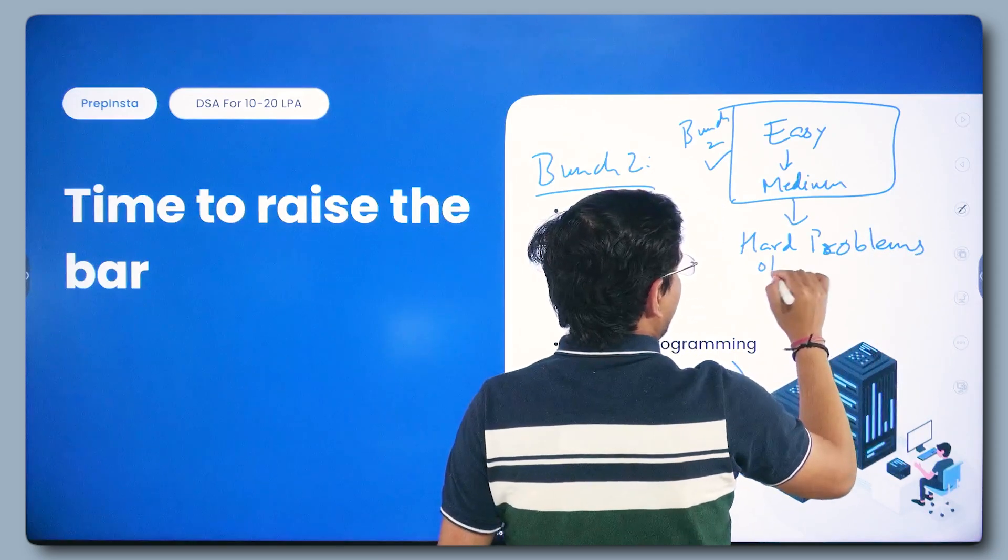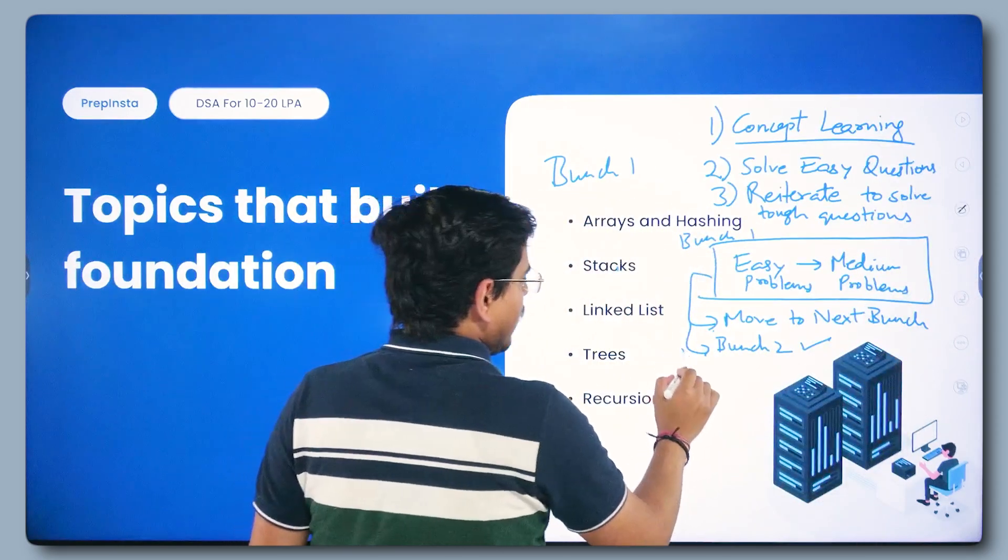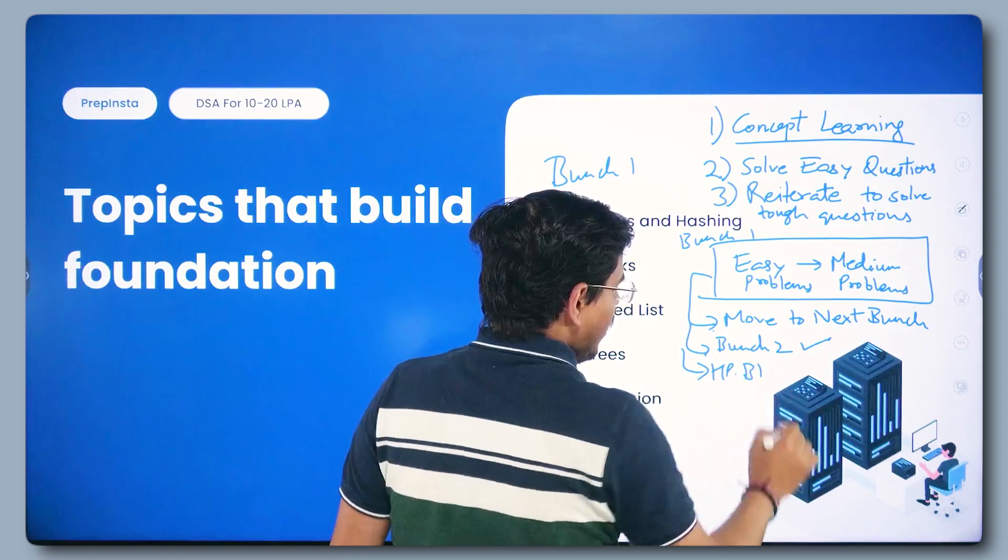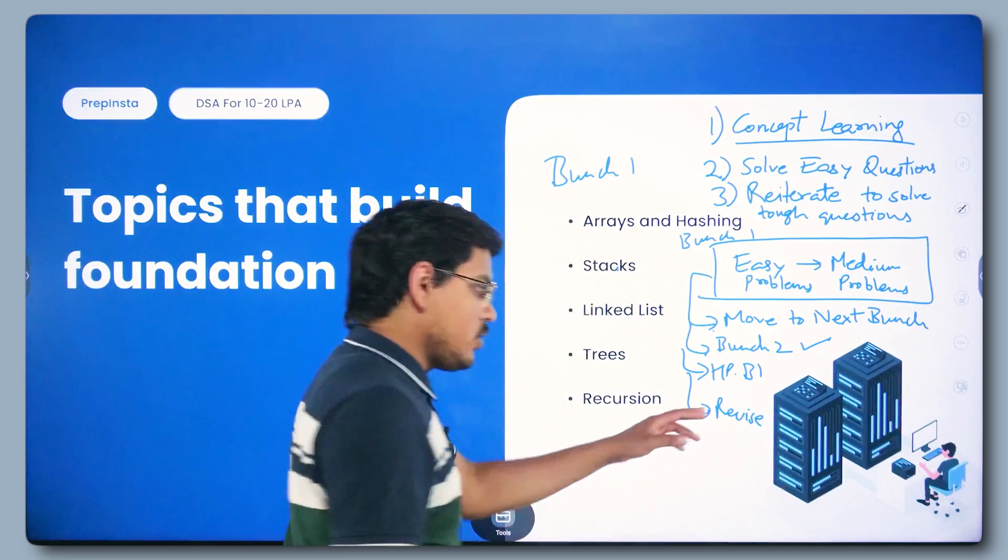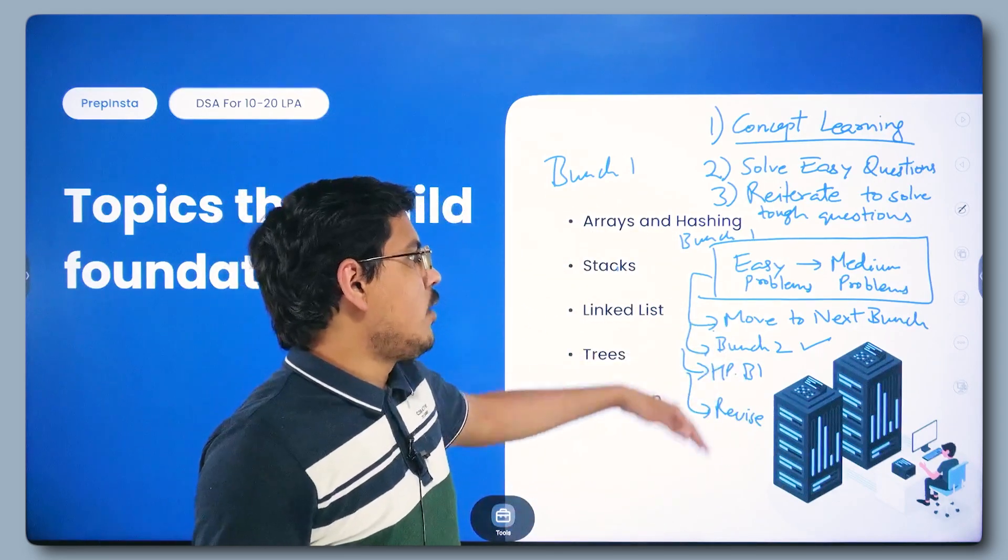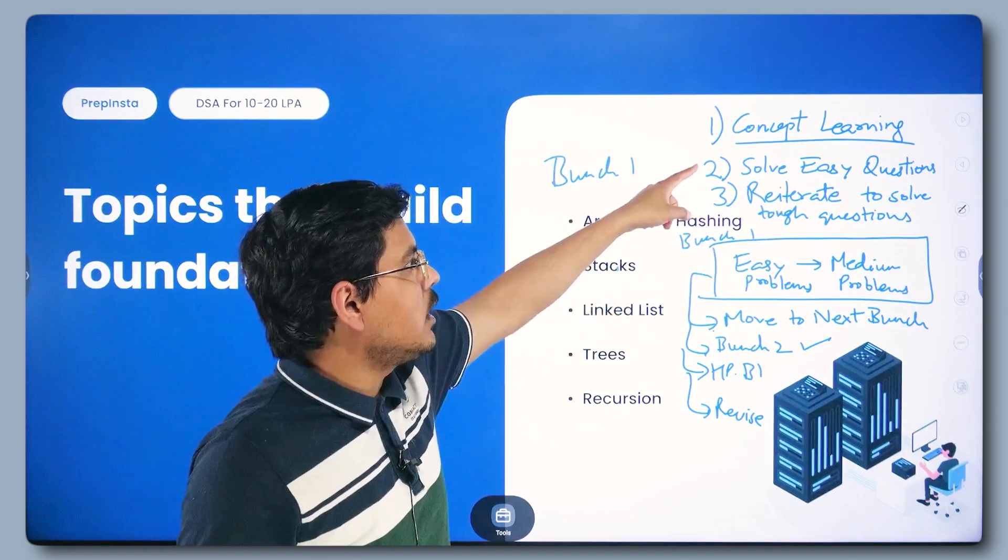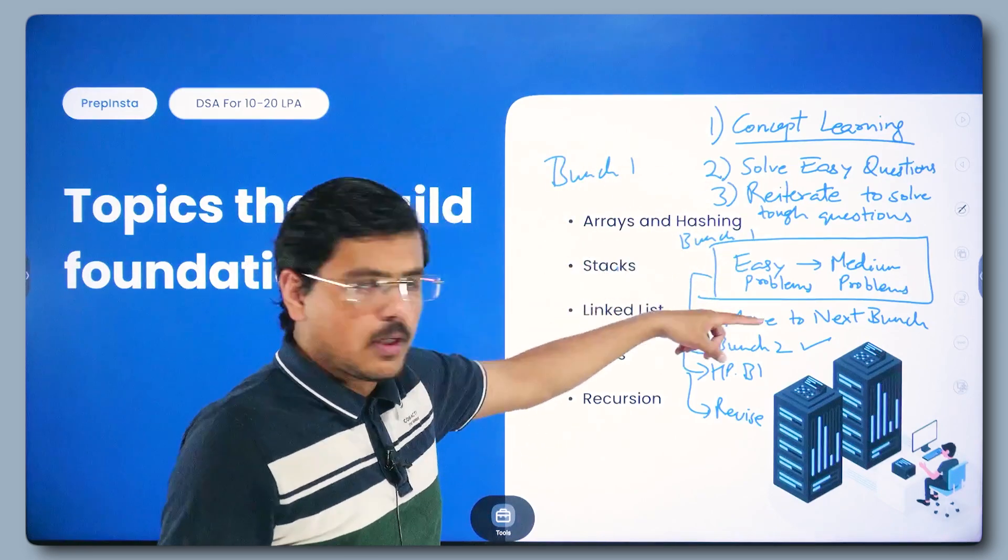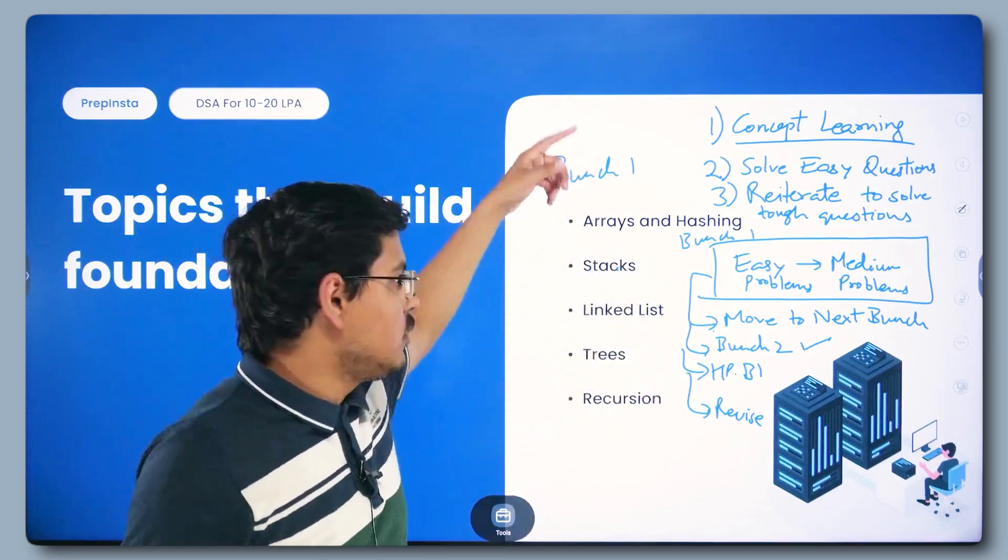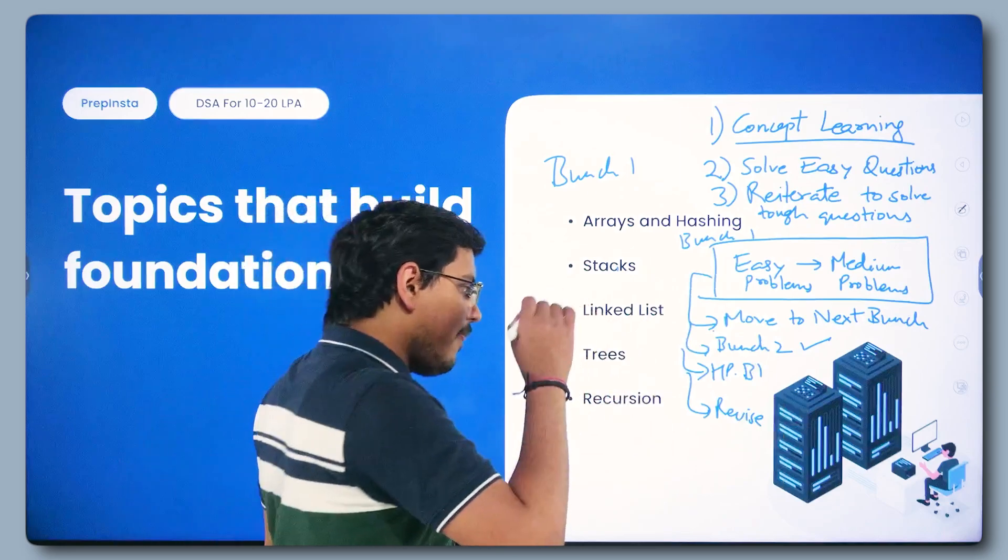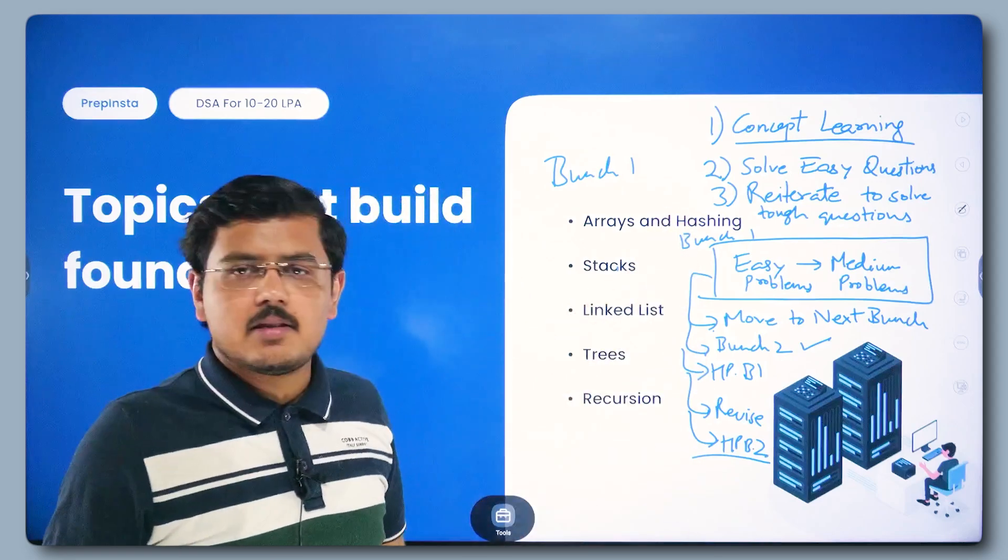Once this is done, binary search also is included in bunch 2. These are super important. Now once you're through with them, easy, medium problems only, not hard problems. Once bunch 2 is complete, what you need to do is hard problems of bunch 1. Then revise. I'll come to this more. In this order you have to go: easy, medium problems for bunch 1, move to next bunch, complete that bunch with basic concepts learning, solve easy questions, then medium questions, bunch 2 complete, then hard problems bunch 1, and then revise all the easy, medium problems, concepts, and then you can go to hard problems bunch 2.